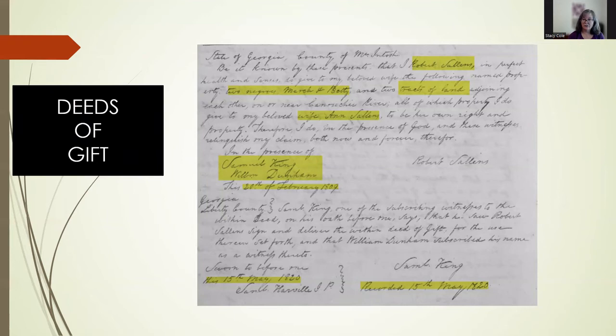Finally, we're going to go over deeds of gift, which are relatively easy in comparison to the other documents. Why would someone document a gift? In the case of valuable property — like people held in slavery, or land, or even horses and cows — it's best to document the transfer in case the person receiving the gift wants to sell, bequeath, or re-gift the property at some point. But that doesn't mean every gift was documented in court. Just like deeds of conveyance, these might be held for years before getting recorded, or they might never get recorded if no need was seen for it.